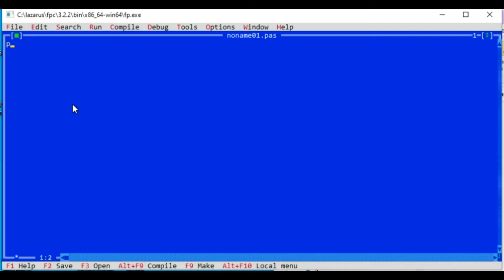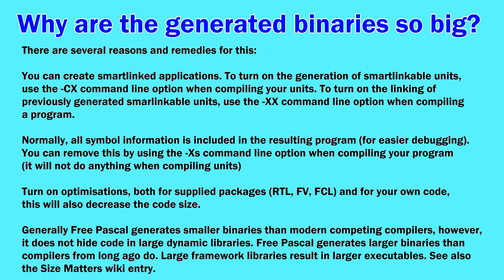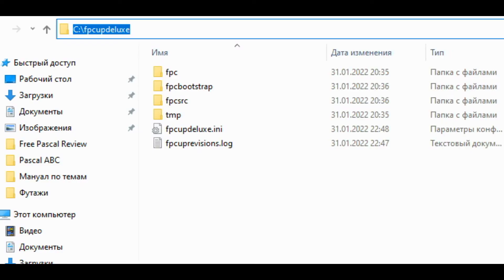When working with the compiler, to reduce the size of the binary code you can enable optimization for supplied RTL, FV, FCL packages, and your own code. Use the -XS command line option when compiling to disable symbol information. When creating smart apps, use the -CX command to enable generation of smart anchor units, and use the -O2 command line option to enable smart linking of previously generated units. To remove the compiler, just delete the folder in which the installation was performed.